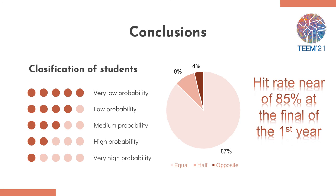In this first year, we identified that 80% of the identifications made in the first semester are the same students who, by the end of the first year, have problems. This suggests that the ponderation of the indicators is very effective.